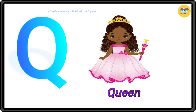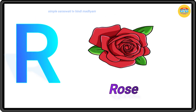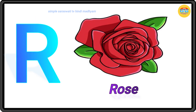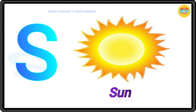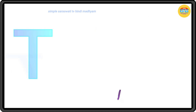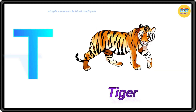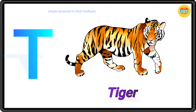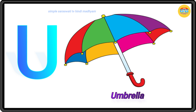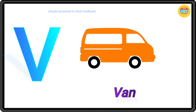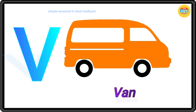Q for pin, R for rose, S for sun, T for tiger, U for umbrella.